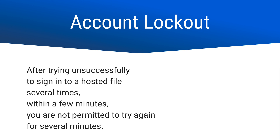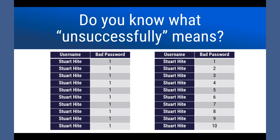For example, the first one: after trying unsuccessfully. What does unsuccessfully mean? On the left, we have the same username and the same incorrect password of 1, attempted 10 times. On the right, we have the same username but 10 different incorrect passwords. Both deliver unsuccessful attempts several times. Which one will trigger this account lockout feature? Or will both? Let's find out.